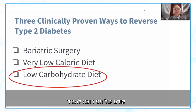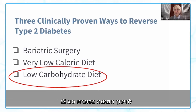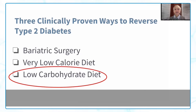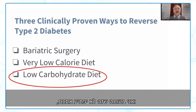There are really three clinically proven ways to reverse type 2 diabetes: bariatric surgery, very low calorie diets, and low carbohydrate diets. But my talk today is very specifically going to be focused on low carbohydrate diets.